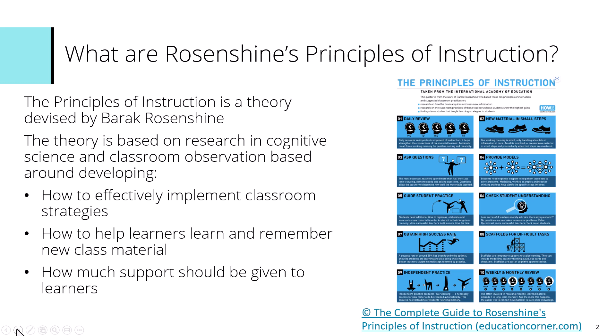The Principles of Instruction is a theory devised by Barrett Rosenshine, based in research around cognitive science combined with classroom observation. It focused on three things: how to effectively implement classroom strategies, how to help learners learn and remember new material, and how much support should be given to learners and when. From this investigation he devised a theory to help tackle some of these issues.